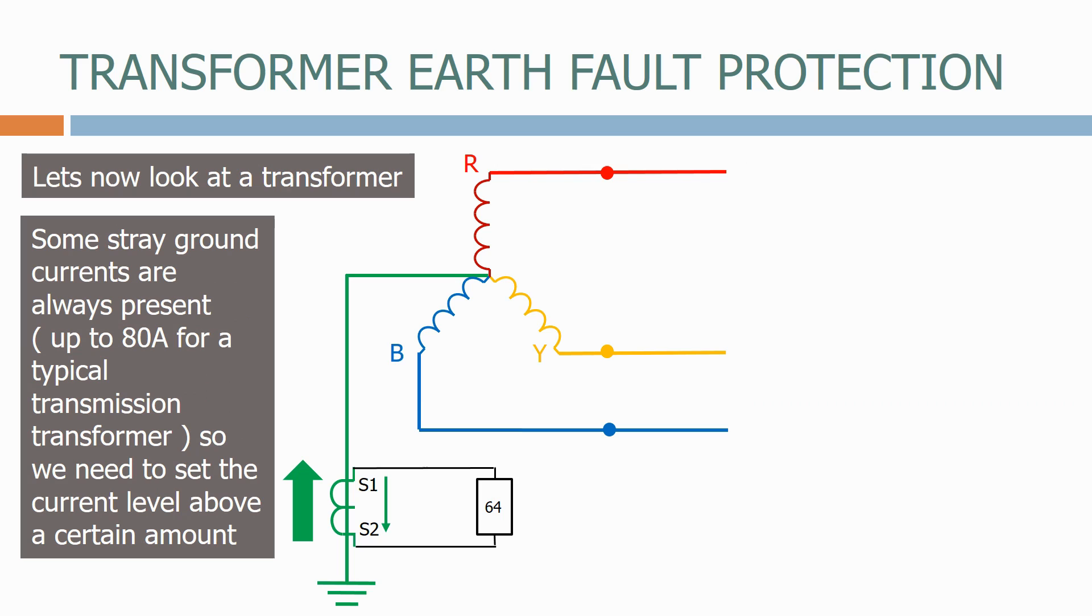Some stray ground currents are always present, up to 80 amps for a typical transmission transformer, so we need to set the current level above a certain amount.